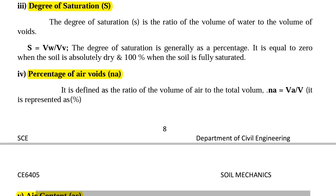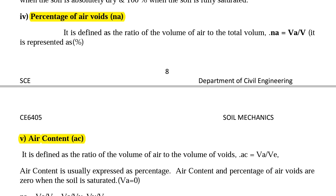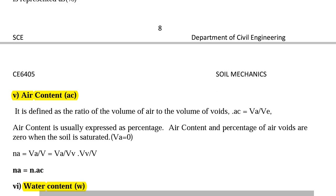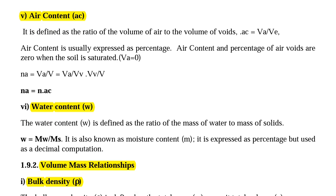Next we are going to see percentage of air voids Na. Percentage of air voids is defined as the ratio of volume of air to the total volume. Air content AC is defined as the ratio of volume of air to the volume of voids: AC equal to Va divided by Vv, usually expressed in terms of percentage. For a fully saturated soil, Va equal to 0. For dry soil, Va equal to 100. And also Na equal to N multiplied by AC.